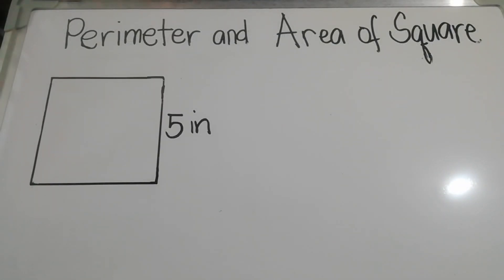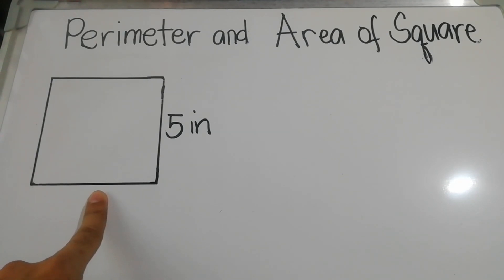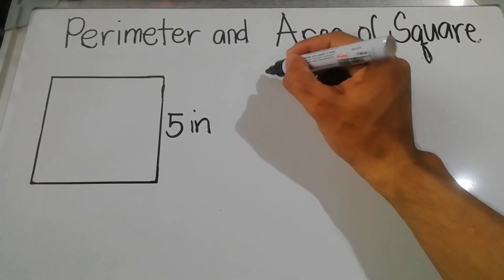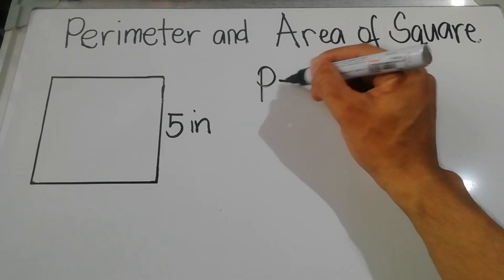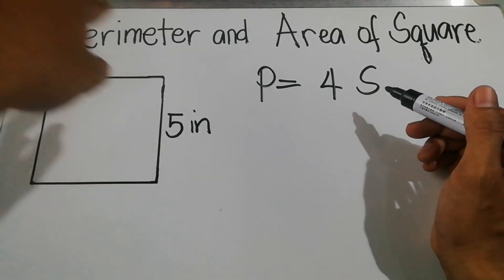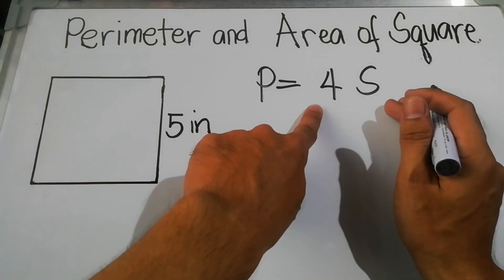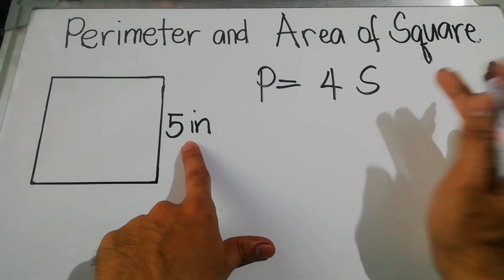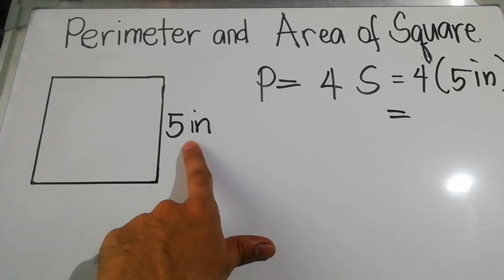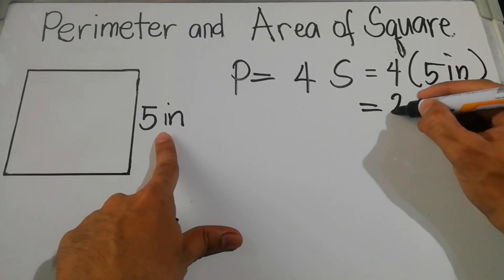For additional practice, let us have another example with a side measurement of 5 inches. Since all sides of the square are equal, all sides are 5 inches. The formula for the perimeter is P = 4 times s. Since our side equals 5 inches, substituting gives us 4 times 5 inches, which equals 20 inches.